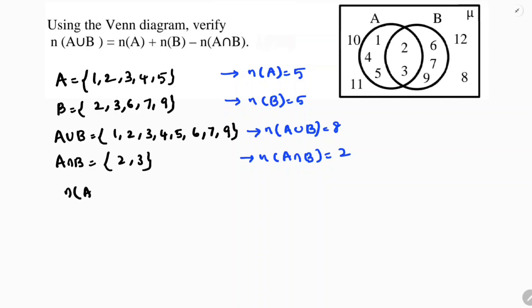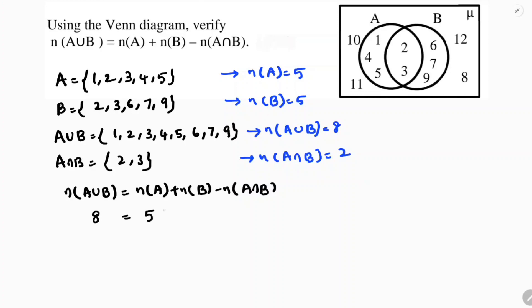Now to verify: n(A∪B) = n(A) + n(B) - n(A∩B). The number of elements in A∪B is 8. In A we have 5, in B we have 5, and the common elements are 2. So: 8 = 5 + 5 - 2 = 10 - 2 = 8. Therefore, 8 = 8, and the formula is verified.